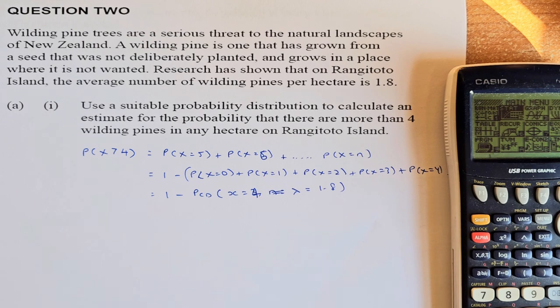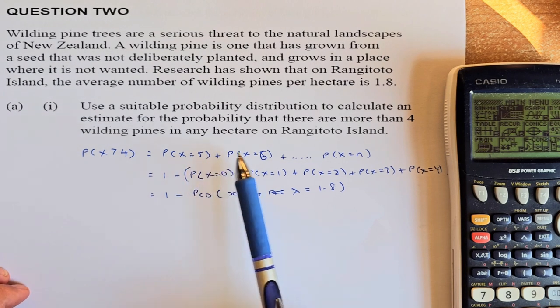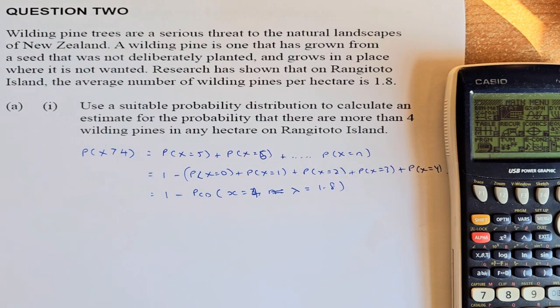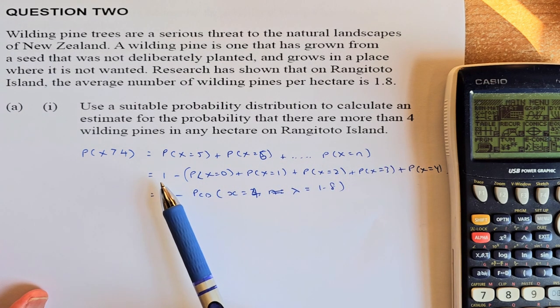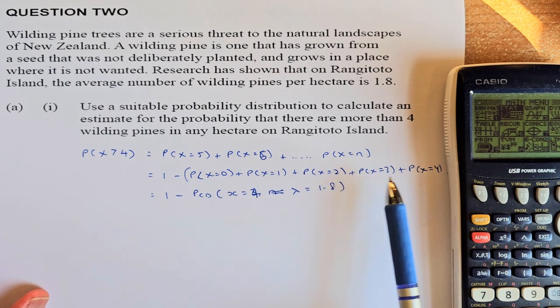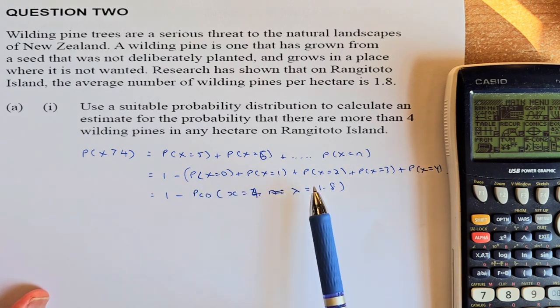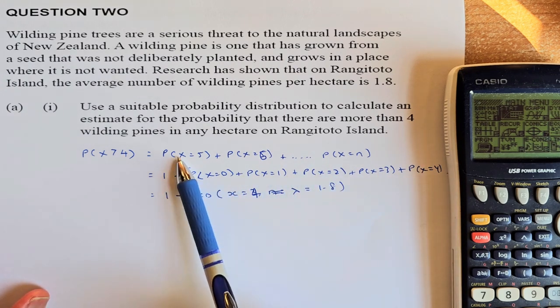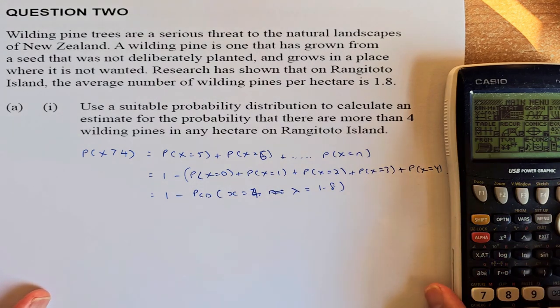So we are going to solve using the Poisson distribution. We are calculating the probability that is more than 4, which means we are calculating 5, 6, 7 until infinity. To calculate 5, 6, 7, 8, 9 to infinity, we need to calculate 1 minus 0 plus 1 plus 2 plus 3 plus 4. So if we can calculate the PCD from 0 to 4, then we can take 1 minus that. Now, once we have done that, we are going to bring in the calculator.